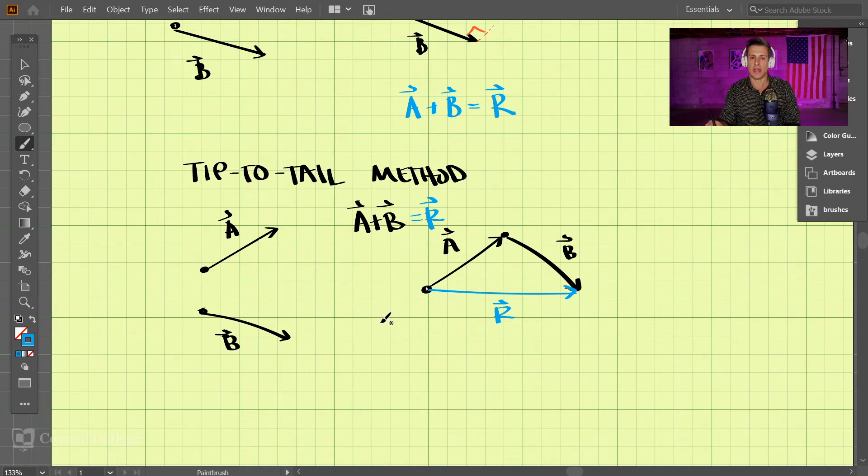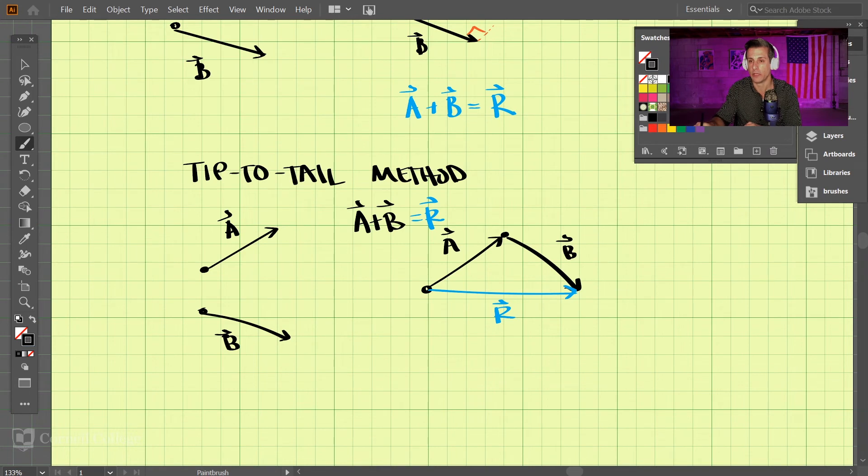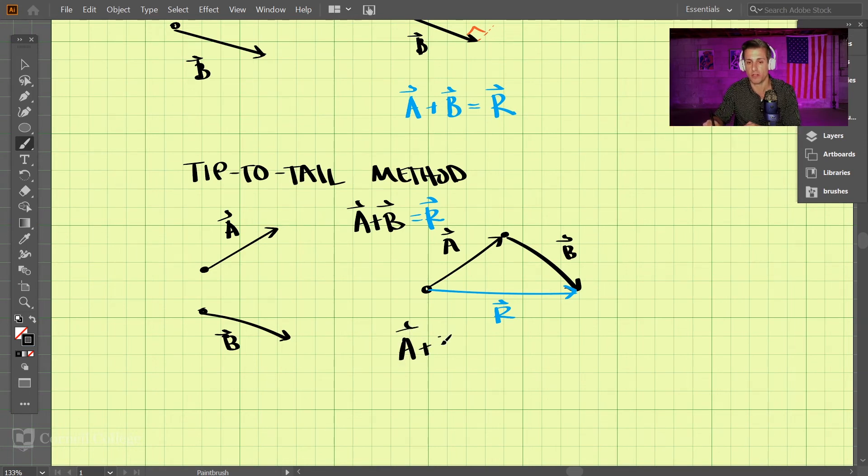And the reason I like this method better is because you can add more than two vectors at a time. We could do things like, we could add vectors A plus B plus C, right? And we would just chain these together and then draw our resultant vector from the very tail here to the last tip.